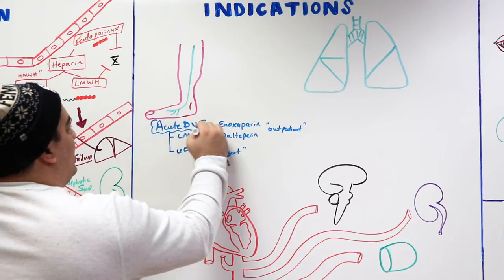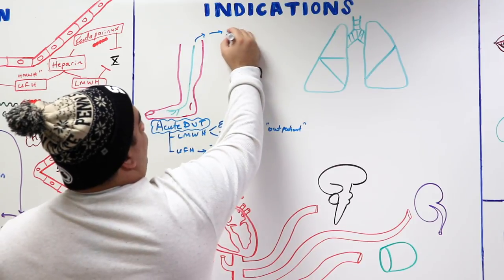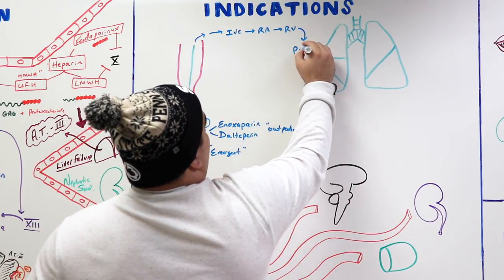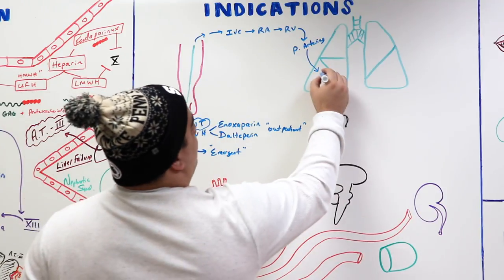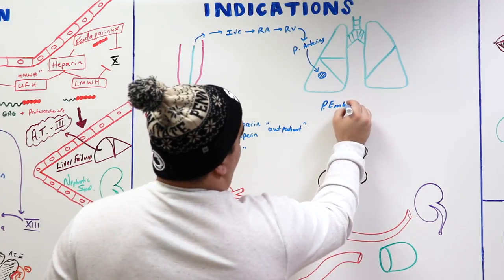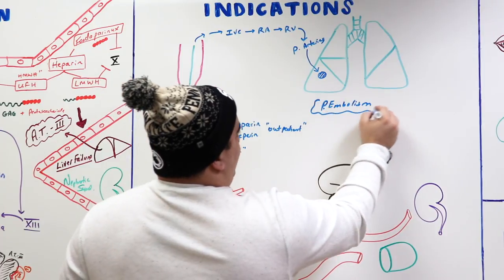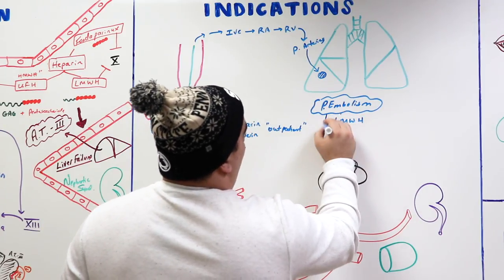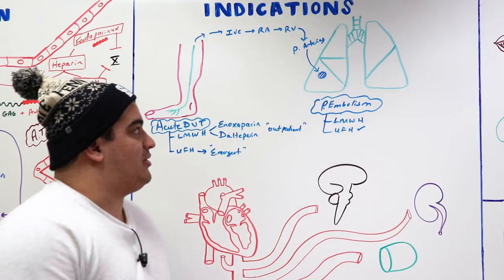Low molecular weight heparin can be used for acute DVTs and pulmonary embolisms. If a clot breaks off, it travels through the inferior vena cava, to the right atrium, right ventricle, then into the pulmonary arteries, gets lodged, and can lead to significant hypoxia. For pulmonary embolisms, you're more likely to go with unfractionated heparin due to the severity and serious danger they present.